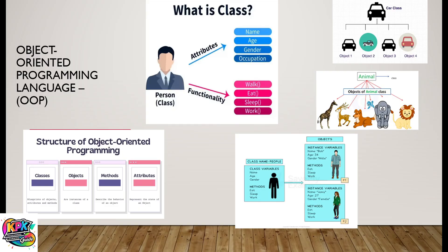Hello and welcome back to our Introduction to Programming series. This lecture is looking at the concept of classes in object-oriented programming. A class is a template or blueprint of objects, attributes, and methods. An object is defined as an instance of a class. A method describes the behavior of an object, and an attribute represents the state of an object.